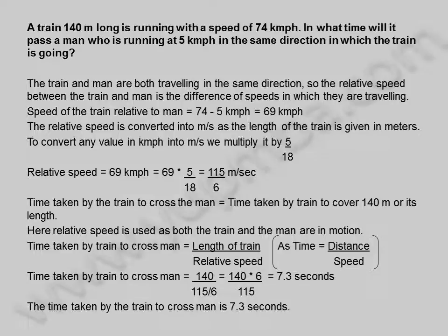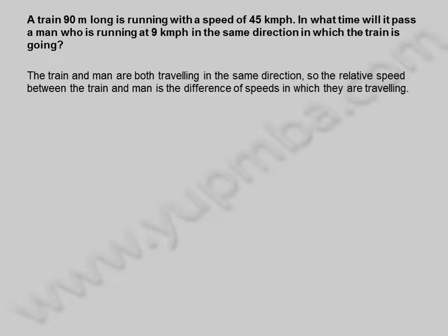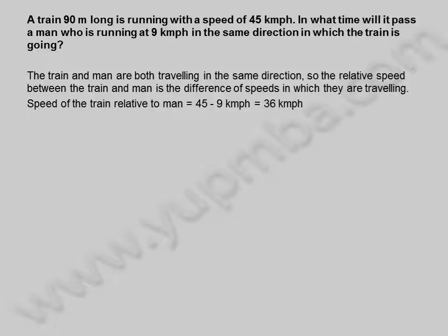Let us see another example. A train 90 meters long is running with a speed of 45 kilometers per hour. In what time will it pass a man who is running at 9 kilometers per hour in the same direction in which the train is going? The train and man are both traveling in the same direction, so the relative speed between the train and man is the difference of speeds. Speed of the train relative to man is equal to 45 minus 9 kilometers per hour.